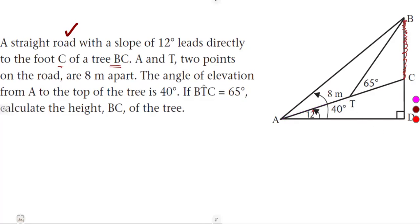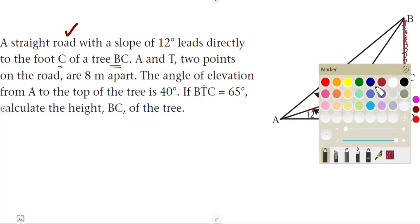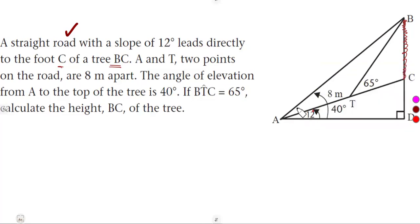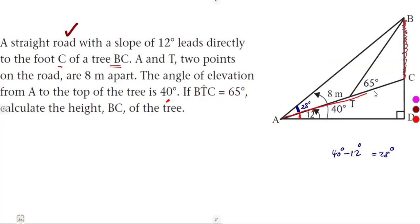The angle of elevation from A to the top of the tree at B is 40 degrees. Since the road slope is 12 degrees, the remaining angle inside the triangle at A is 40 minus 12, which is 28 degrees. So there are two angles at A. The angle of elevation is 40 degrees, and there is also a 65 degrees at T.